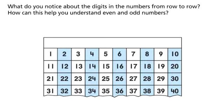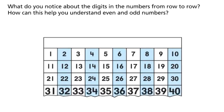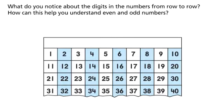What do you notice about the digits in the numbers from row to row? How can this help you understand even and odd numbers?